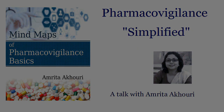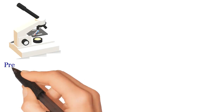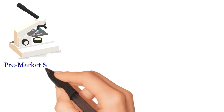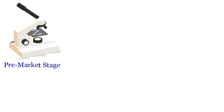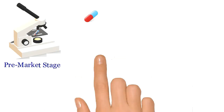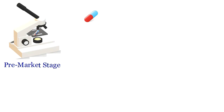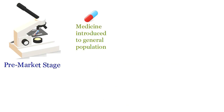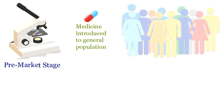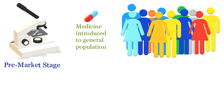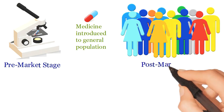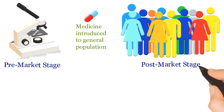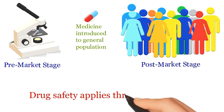So Amrita, when does the drug safety monitoring actually start? Drug monitoring is a continuous process and it covers the complete life cycle of a drug, starting from the test phase to the phase in which the drug is available in the market for use in the general public.